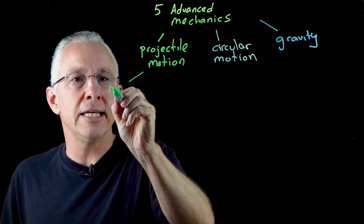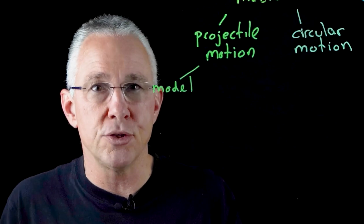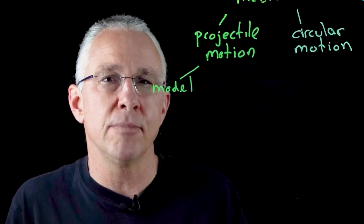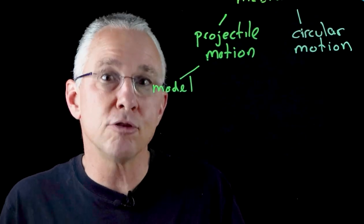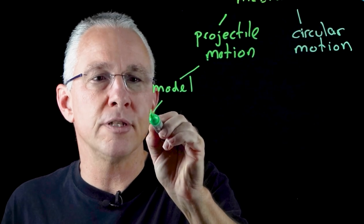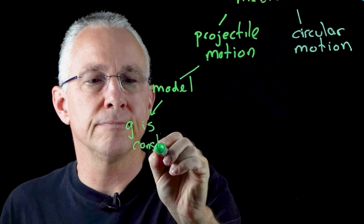The first key point to remind ourselves is that it's a model. In other words, we are simplifying projectile motion by ignoring two important factors that actually exist in most situations. To make the mathematical analysis easier to understand, we make two assumptions. The first assumption is that g is constant.